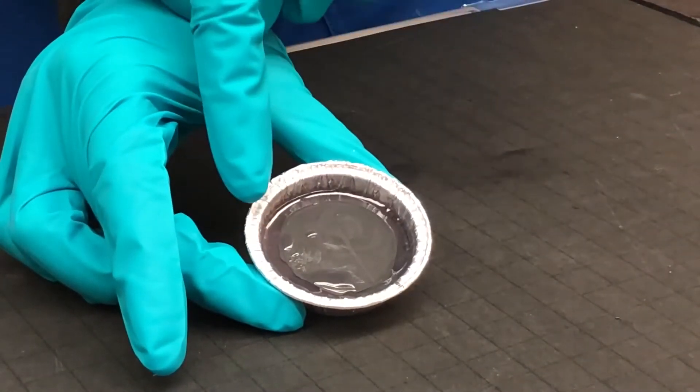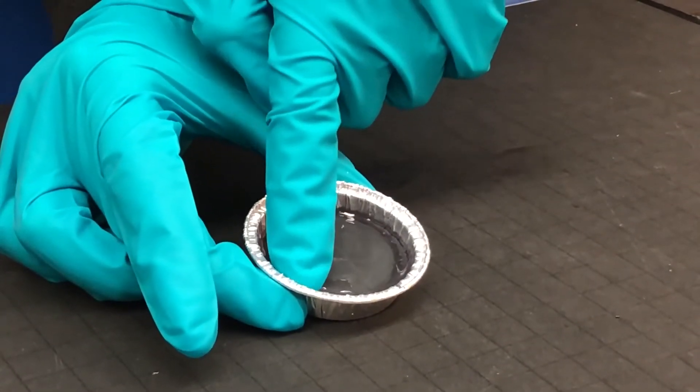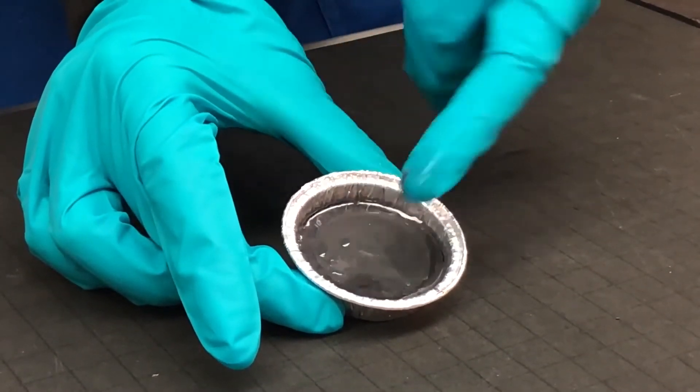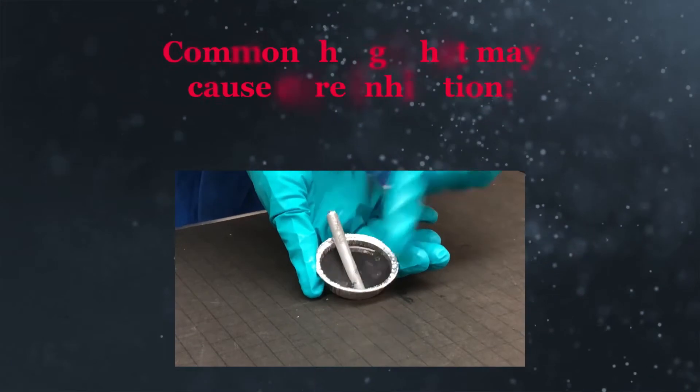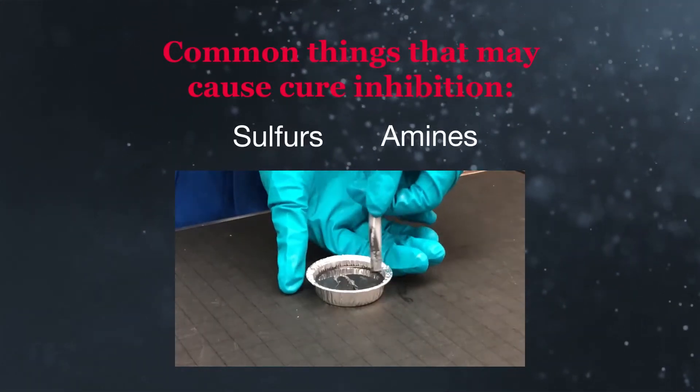To determine where the problem came from, it is often useful to try to determine exactly where the issue is observed on the part and within the silicone and if cure inhibition is the cause. The inhibitors are often materials containing sulfur or amine species, though there are a few others.